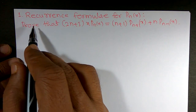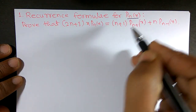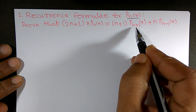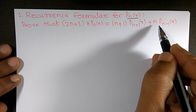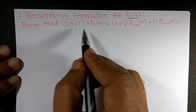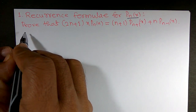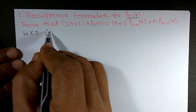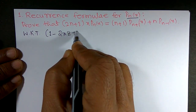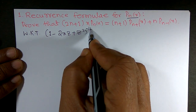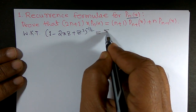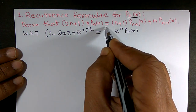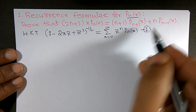Hello friends, we want to prove a recurrence formula for the Legendre polynomial Pn(x), namely (2n+1)·x·Pn(x) = (n+1)·P_{n+1}(x) + n·P_{n-1}(x). We can prove this result by using a generating function. We begin with the generating function: (1 - 2xz + z²)^(-1/2) equals the summation of z^n · Pn(x) for n from 0 to infinity. I will call this equation number 1.